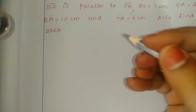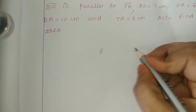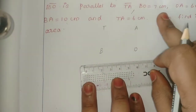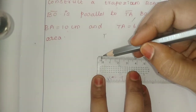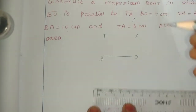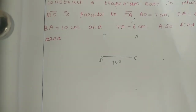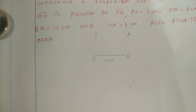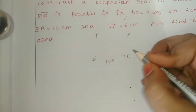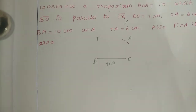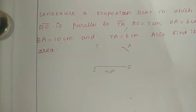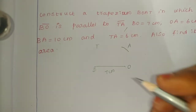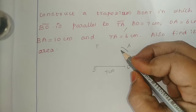So first, in the rough diagram, BOAT is the shape. BO is 7 cm. Next, OA is 6 cm, and BA is 10 cm.